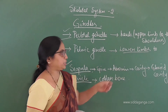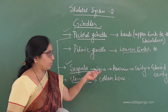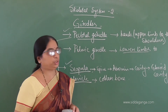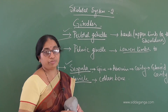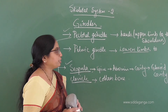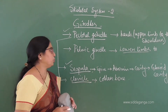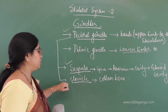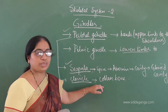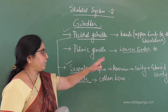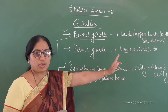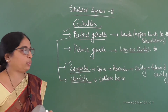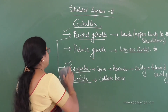The joint present between the glenoid cavity and the humerus bone is the ball and socket joint, which enables the movement of the humerus bone. So the pectoral girdle comprises two important bones — the scapula and the clavicle, also called the collar bone — and they have a glenoid cavity to which the humerus bone articulates with the pectoral girdle.